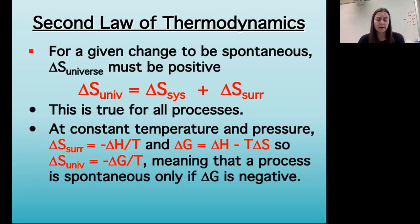We're not going to go deeply into the derivation, but you might remember that when we talked about entropy, we said that the entropy of the surroundings is affected by the change in temperature. So if we have an exothermic reaction, it's going to increase the entropy of the surroundings, and that is also affected by the temperature. The change in the entropy of the surroundings is the opposite of the change in enthalpy divided by the temperature in Kelvin.